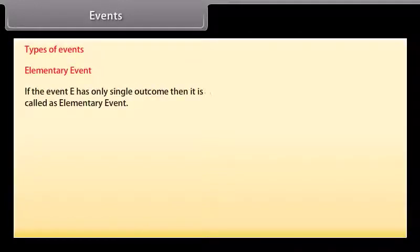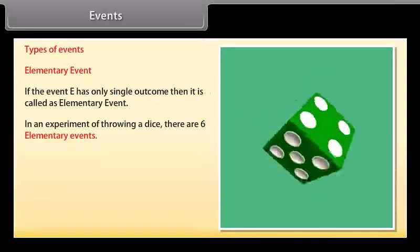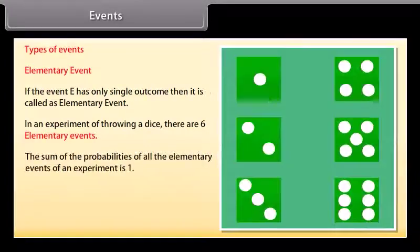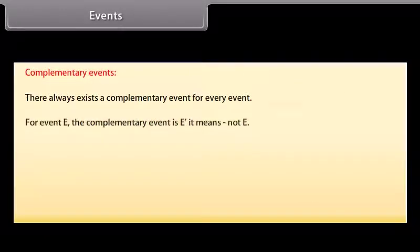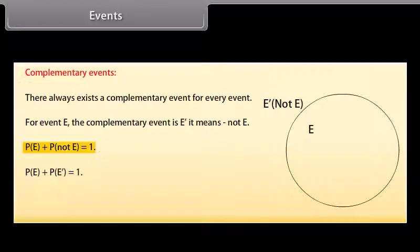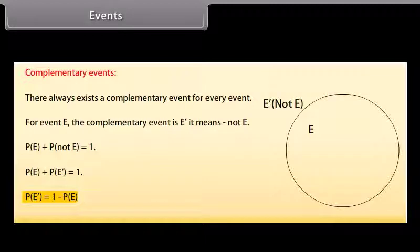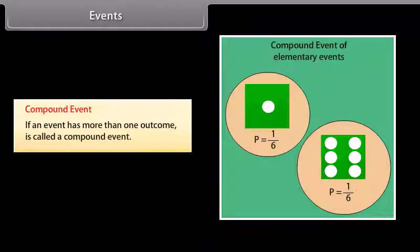Types of Events. Elementary event: If the event E has only a single outcome, then it is called an elementary event. In an experiment of throwing a dice, there are 6 elementary events. The sum of the probabilities of all elementary events of an experiment is 1. Complementary events: There always exists a complementary event for every event. For event E, the complementary event is E' (not E). P(E) + P(not E) = 1, so P(not E) = 1 − P(E). Compound event: An event that has more than one outcome is called a compound event.